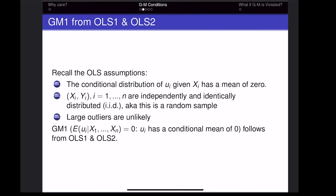OLS assumption one says the conditional distribution of the error term given x has a mean of zero for one observation ui and its corresponding x value. The difference with the Gauss-Markov theorem is that it says the error for any observation, given the x values for all observations, is equal to zero.